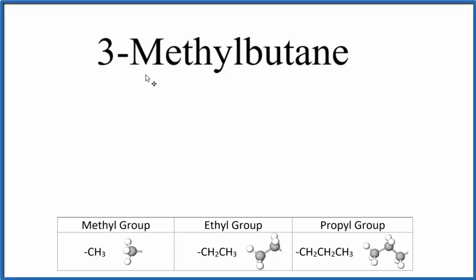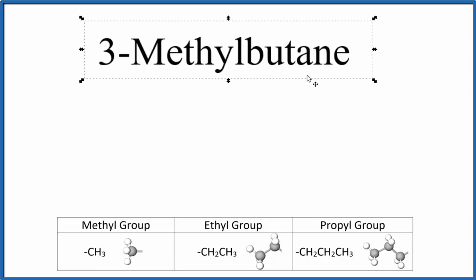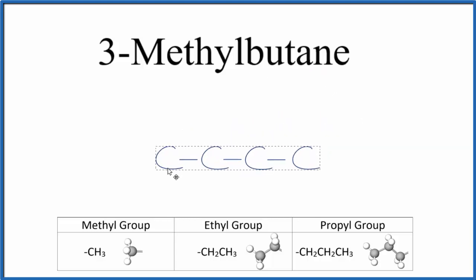Let's write the structure for 3-methylbutane, and we need to be careful here because there's a bit of a problem with this name, 3-methylbutane. So butane, that's four carbons in a row, single bonded. So this would be butane here.